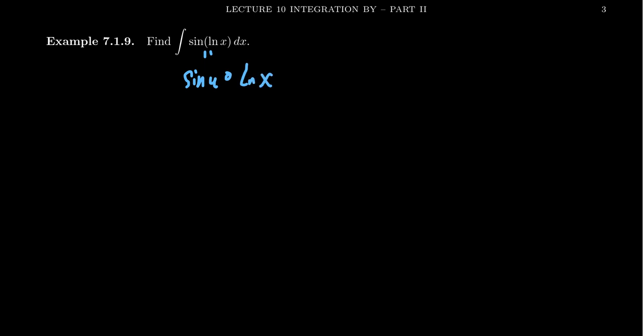We put natural log of x inside of sine. And because we have function composition, it turns out that u substitution actually is going to be the strategy that we want to take here.